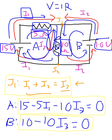Now we have three equations and three unknowns, and you can solve for I1, I2, and I3 using algebra. Looking at equation three: if 10 minus 10I3 equals 0, then I3 must equal 1 amp. Once you solve for one of the currents, you can plug it into the other equations and solve for the rest. I hope this video was helpful — if you still have questions, leave them in the comments. Have a great day.